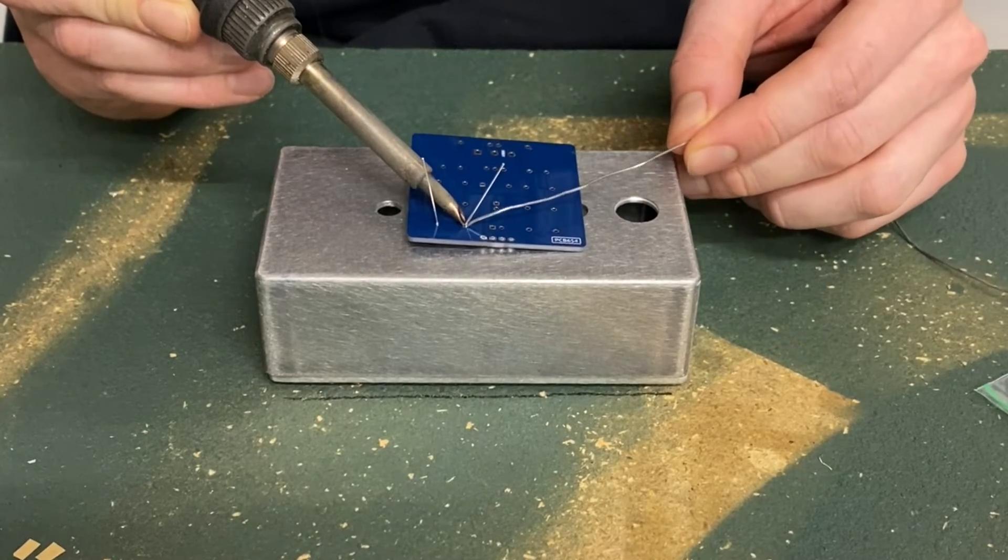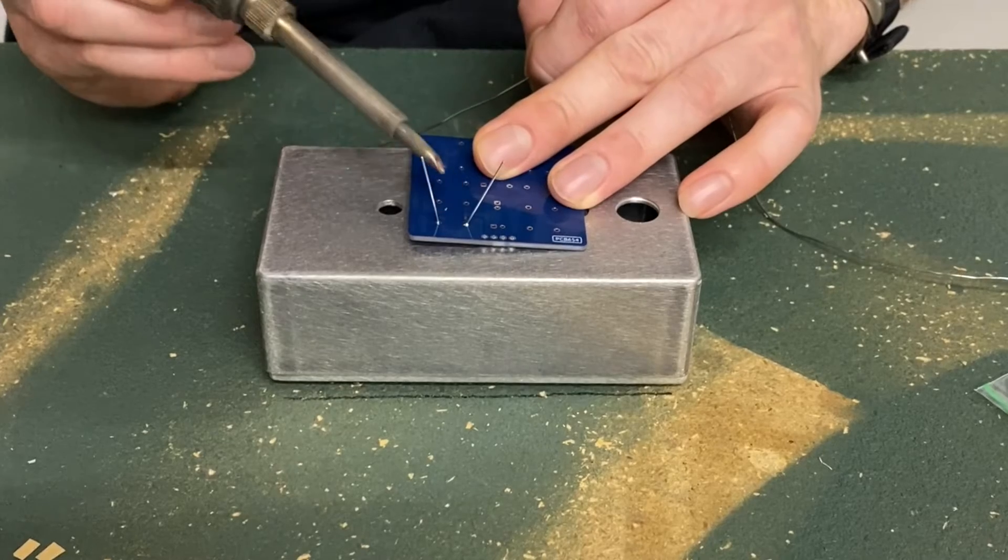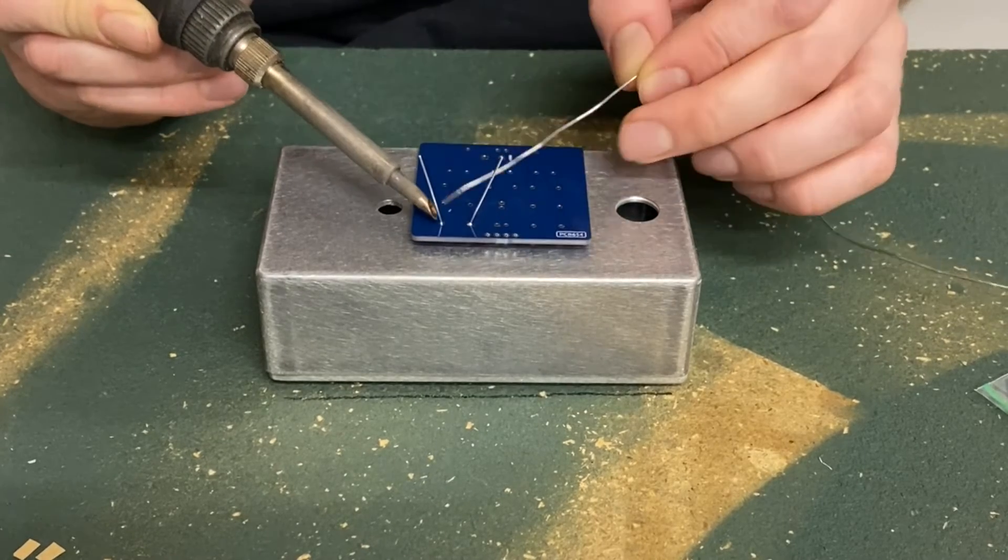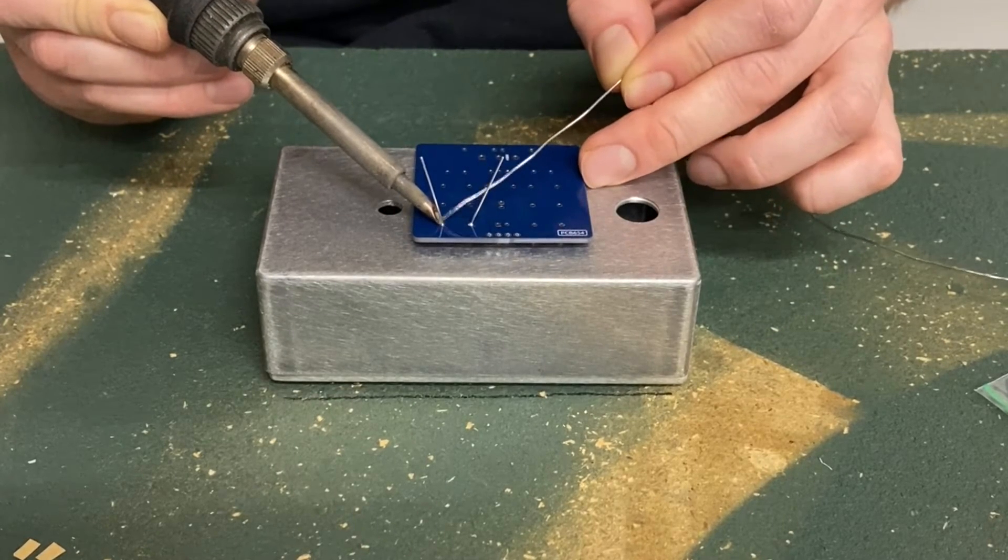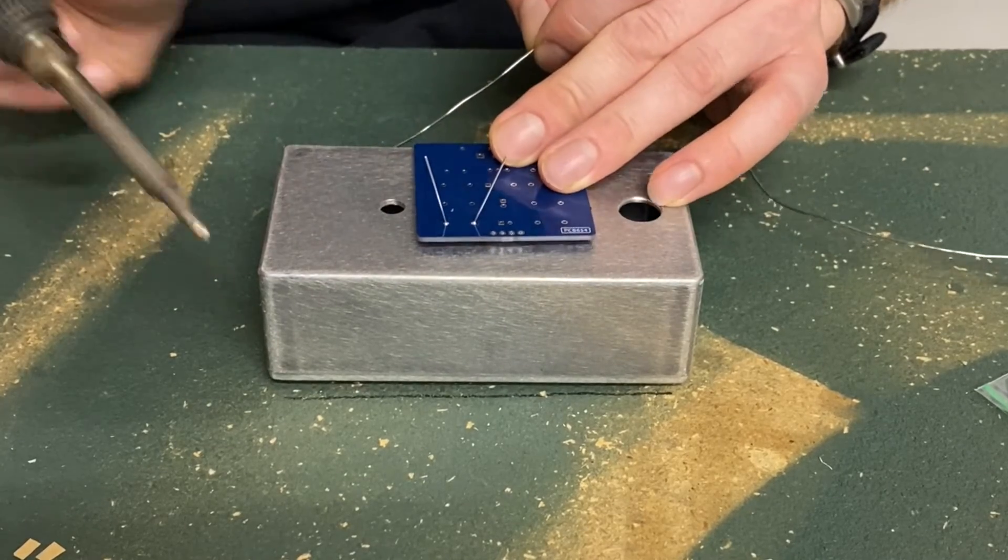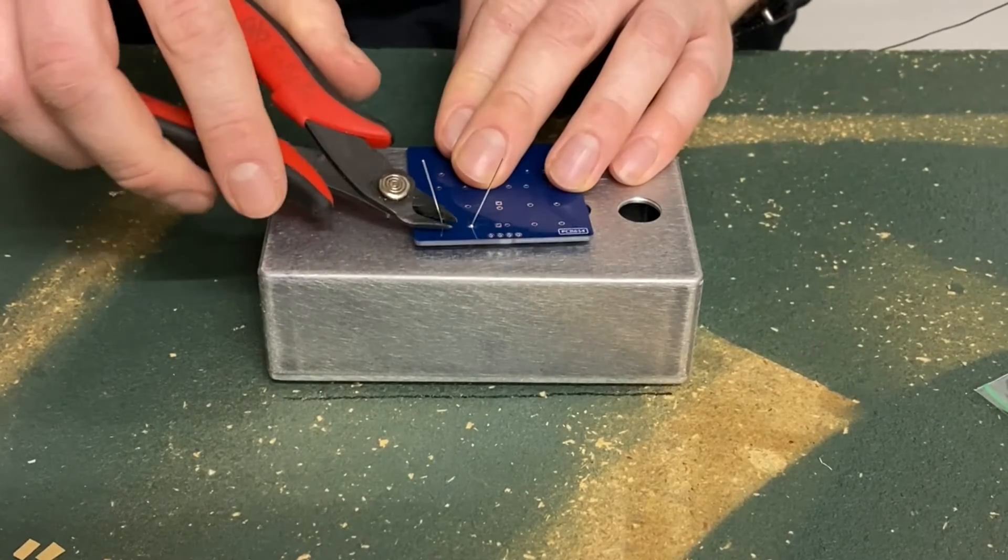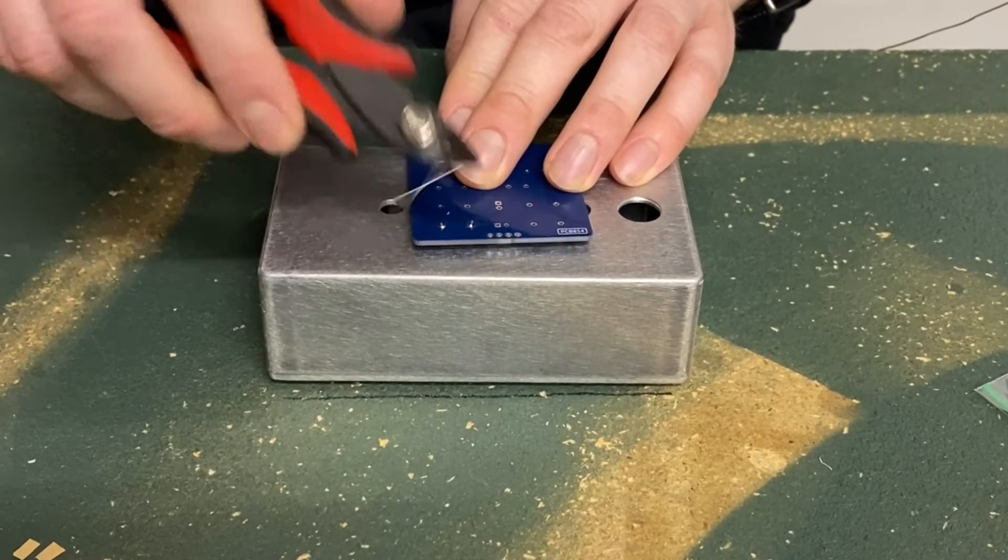Grab your iron. Clean the tip. Then add a little bit of solder to the tip. Wedge the tip of the iron between the component leg and the silvery PCB pad. Wait a second or two. Add solder until it flows. Hold for another second. Then remove the iron. Solder both ends of the resistor and clip the excess leg above the solder joint.